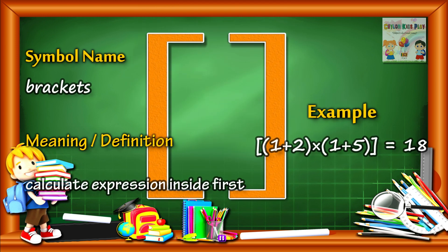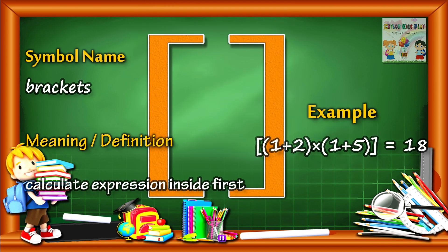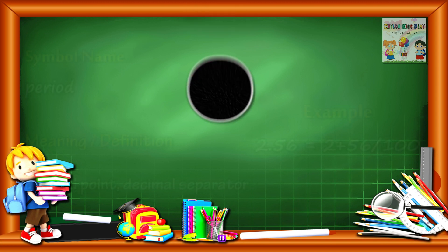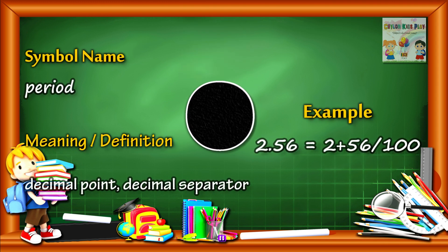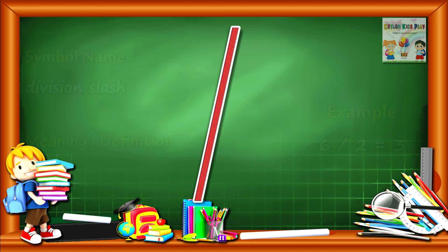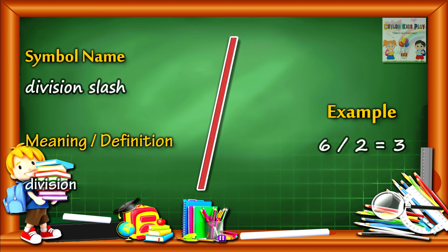Brackets: calculate the expression inside first. Period: decimal point, decimal separator. Division slash: division.